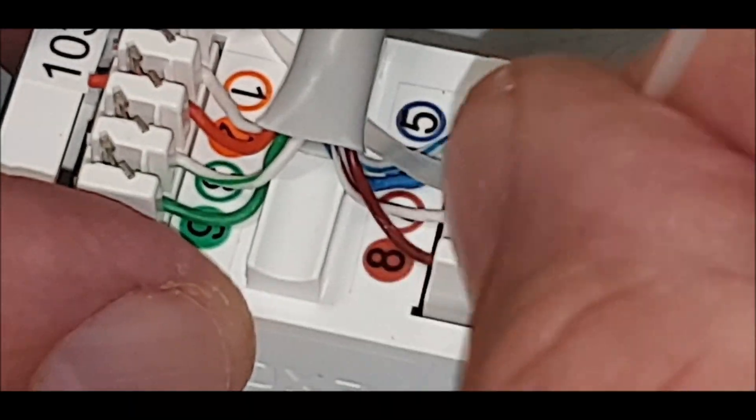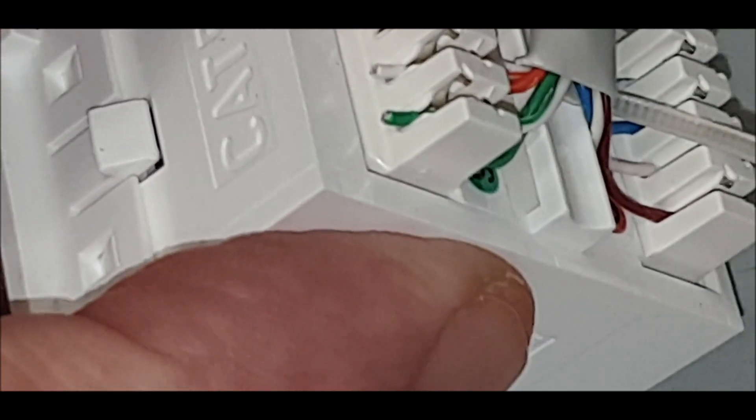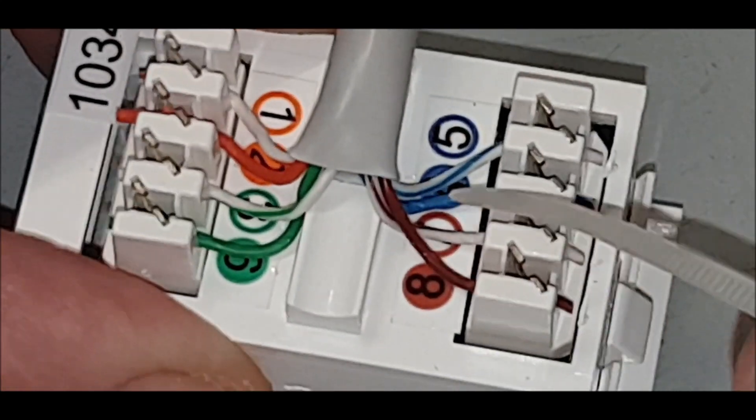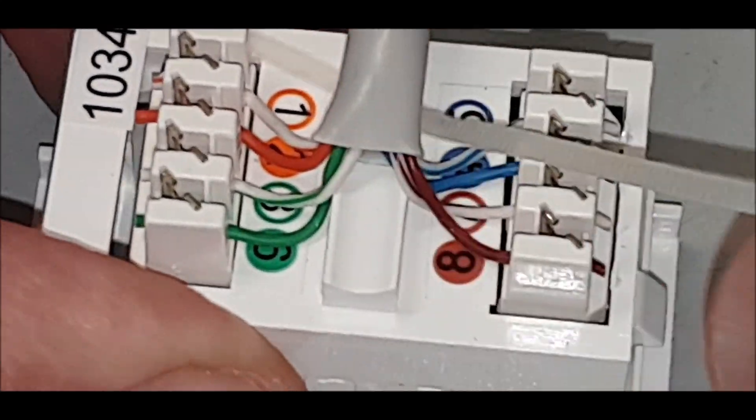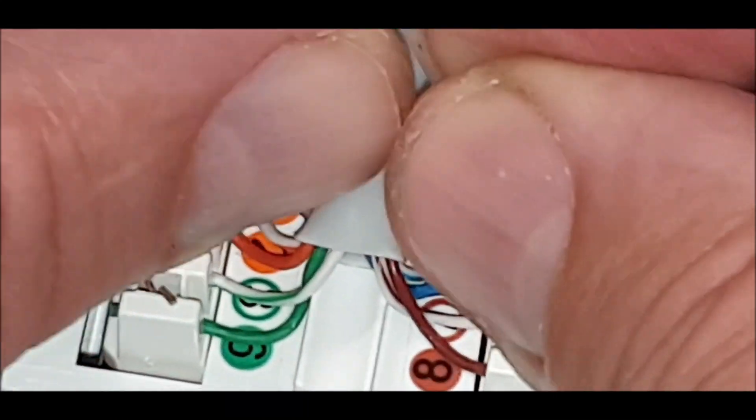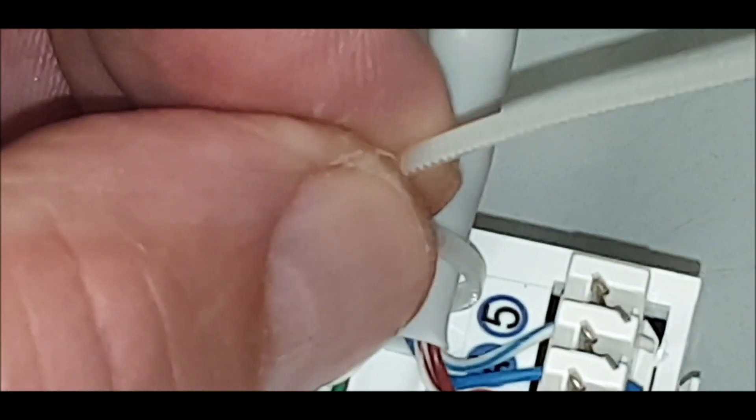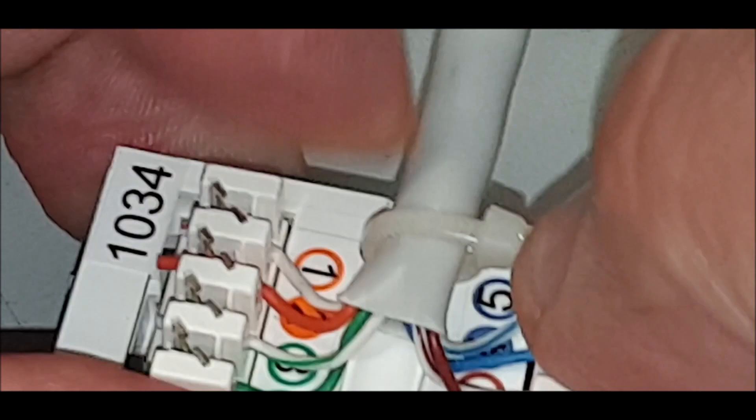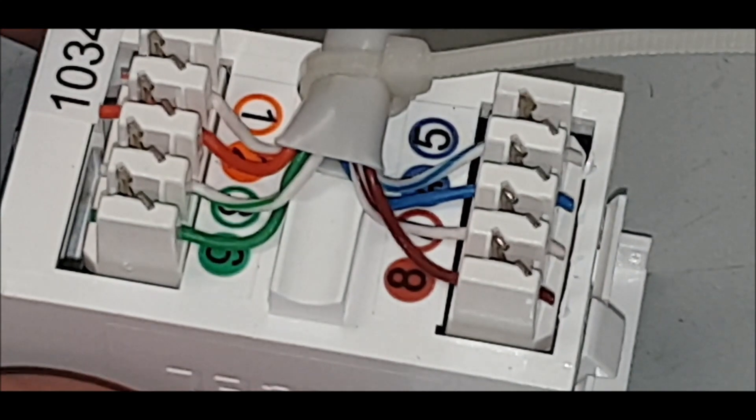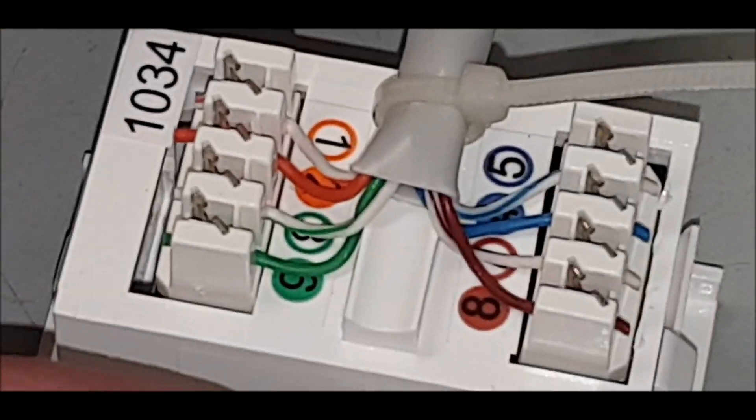There's a groove underneath here. You can see the groove, it's all the way along. Put your tie back through there, put it nice and tight, and then get a pair of cutters.